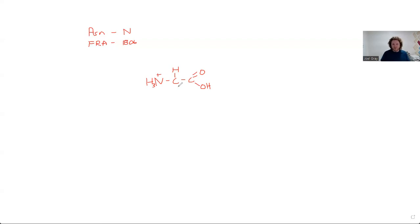My R group coming off of my alpha carbon looks like this: CH2, then C double bonded oxygen and NH2.